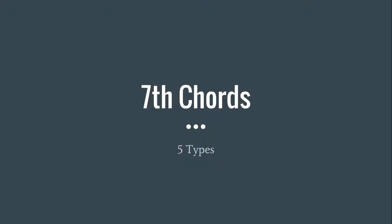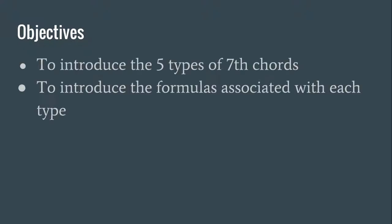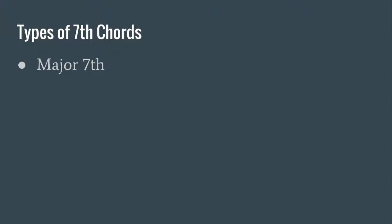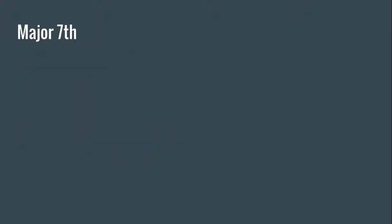Let's talk about the five types of seventh chords. The objective of this lesson is to introduce the five types of seventh chords and the formulas associated with each type. The types are: major seventh, dominant seventh, minor seventh, half diminished seventh, and fully diminished seventh. So let's look at them.